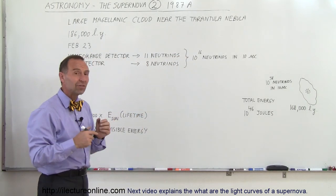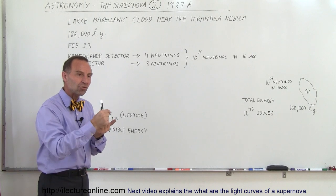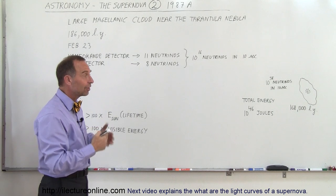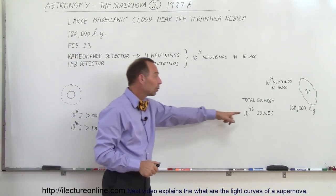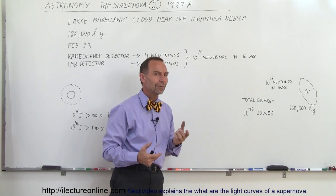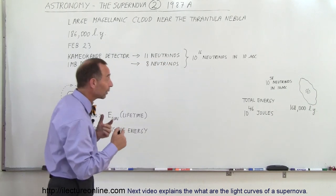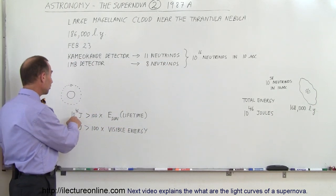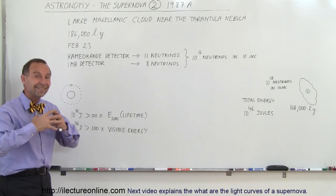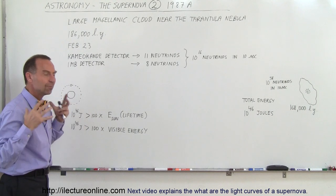What that means was, if we then calculate the speed at which they travel, the mass that they have, and we then calculate how many of them would have left that supernova explosion, the energy released in that 10-second burst was 10 to the 46 joules. That's an enormous amount of energy, because 10 to 46 joules is about 100 times the energy released by the Sun in its entire lifetime.